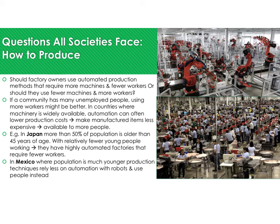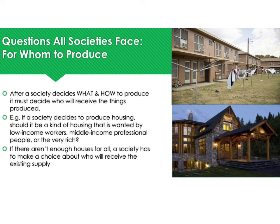Where there aren't many young capable workers, automation is better. Where you have a younger population like Mexico, it's better to have less automation and more people working. This reinforces Adam Smith's theory that people are the most valuable resource to a country — depending on the age group, that will affect how a nation chooses to produce.